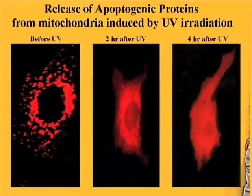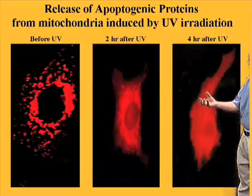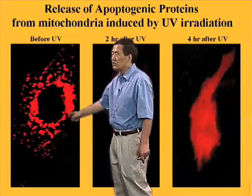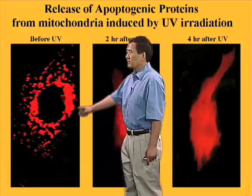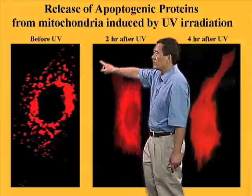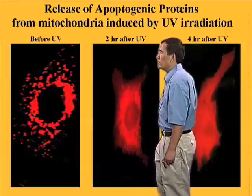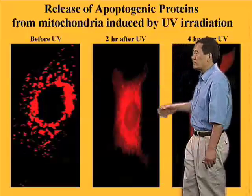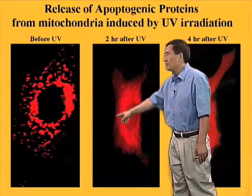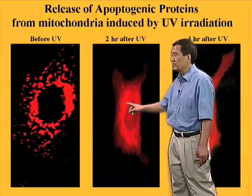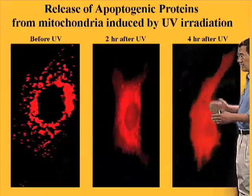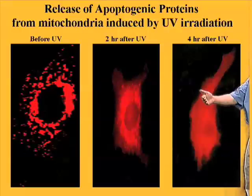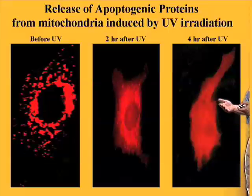Here is a visual demonstration: a protein like cytochrome C, which normally localizes in mitochondria, shows punctuated staining in living cells indicating mitochondrial localization. If you give cells an apoptotic stimulus such as UV radiation and wait a few hours, you can see the mitochondrial protein like cytochrome C start to come out of the mitochondria, and in late-stage apoptosis it shows diffuse staining — it is everywhere. Release from the mitochondria to the cytosolic compartment is a critical step for apoptosis.